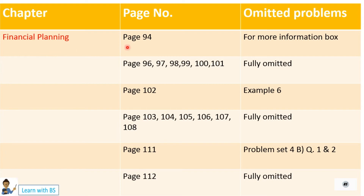Then the next chapter is Financial Planning. Page number 94 — the 'For More Information' box is to be cut; nothing from it will be asked in the exam. Pages 96, 97, 98, 99, 100, 101 are fully omitted — nothing from these pages will come in the exam. Page 102, Example 6 has been omitted — Example 6 will not be there for exam purposes.